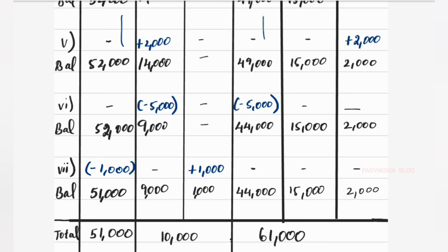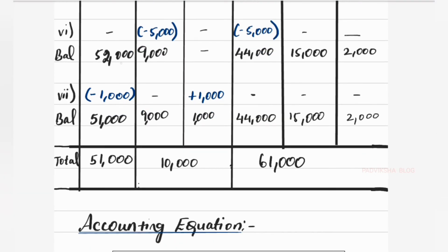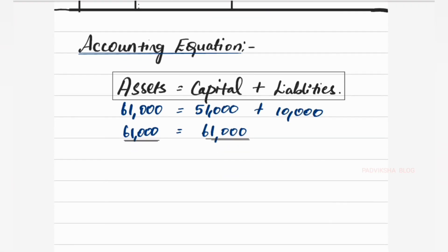Last transaction: rent outstanding ₹1,000 — since it is an outstanding expense, capital reduces by ₹1,000 and rent outstanding account increases by ₹1,000. So capital becomes ₹52,000 minus ₹1,000 equals ₹51,000. Creditors total ₹10,000. Total assets ₹61,000. Accounting equation verified.